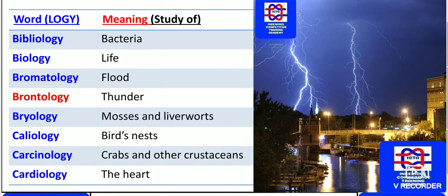Biology means the study of life. The study related to floods is known as brometology. Thunder — the study of thunder and the intensity of thunder is known as brontology.